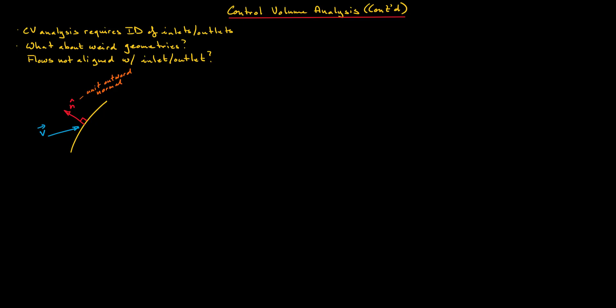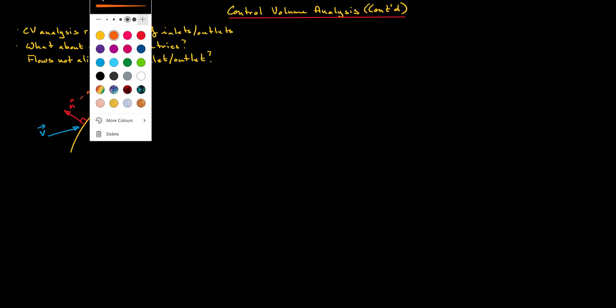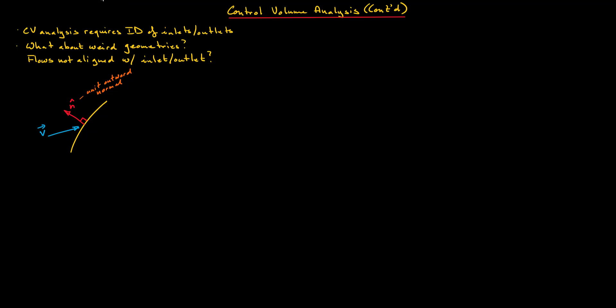What about weird geometries, or flows that are not aligned with the inlet and outlet? Here in this schematic we have a surface — it could be an inlet or an outlet; here it is shown as an inlet. We see that we have a flow with a velocity at an angle to the inlet. We define the inlet as having a unit outward normal: a unit vector of length one that is normal to the local geometry of the inlet.